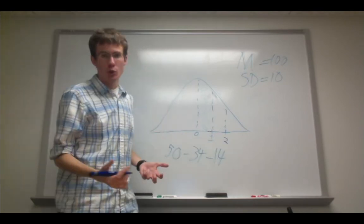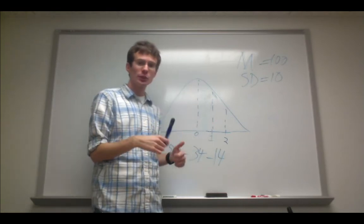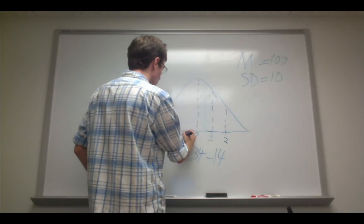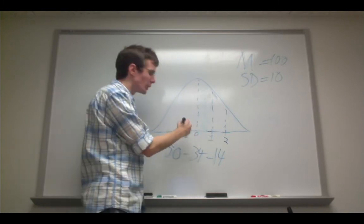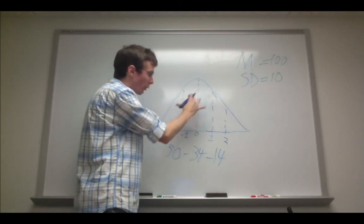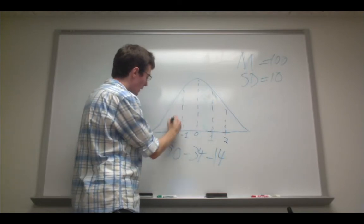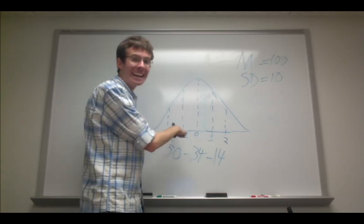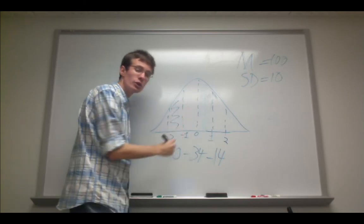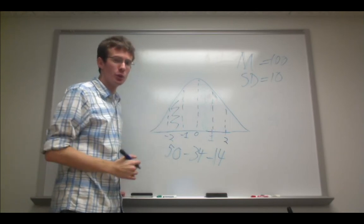Now, because this is a normal distribution and it's perfectly symmetric, the same thing holds for negative z-scores. So, for example, between a z-score of negative 1 and 0 also lies 34% of this entire area of the distribution. And between a z-score of negative 1 and negative 2, this region right here, lies also 14% of the distribution.